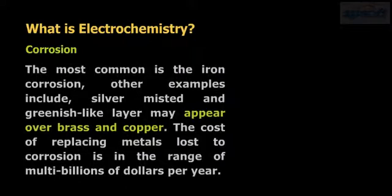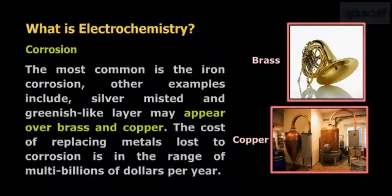The most common is the iron corrosion. Other examples include silver misted and greenish-like layer which may appear over brass and copper. The cost of replacing metals lost to corrosion is in the range of multi-billions of dollars per year.